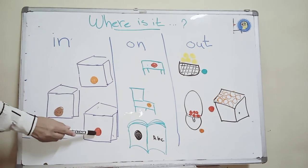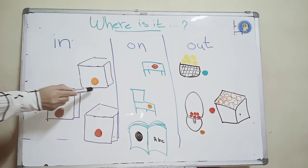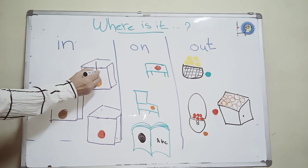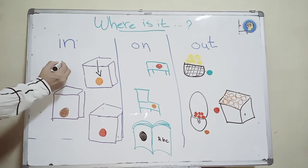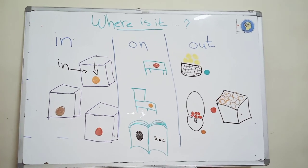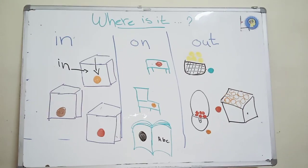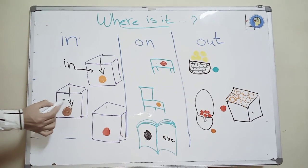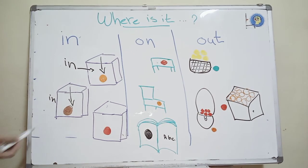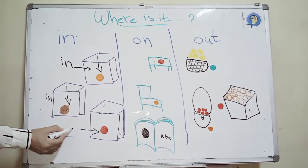I have three balls. Where is the orange ball? The orange ball is in the box. Where is the brown ball? The brown ball is in the box. And where is the red ball? The red ball is in the box.